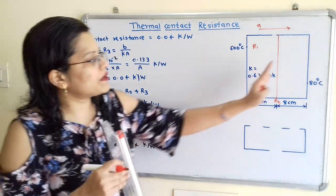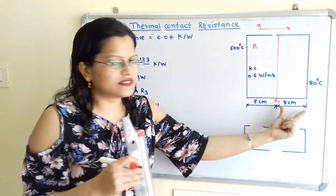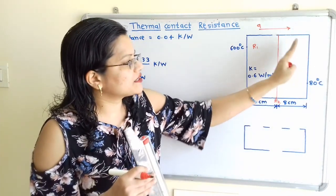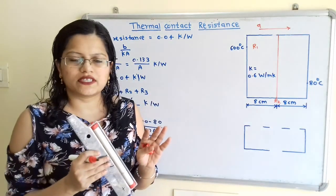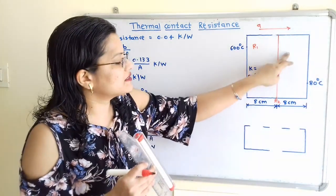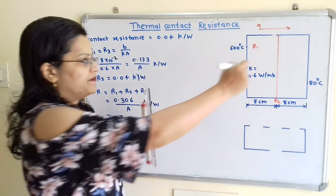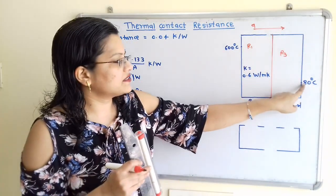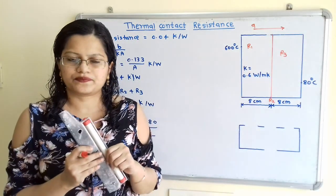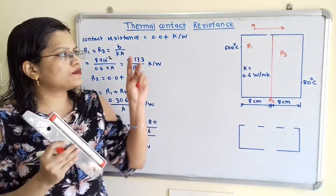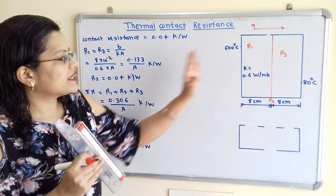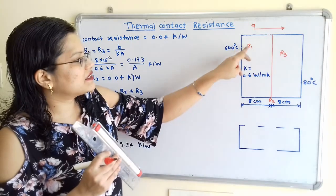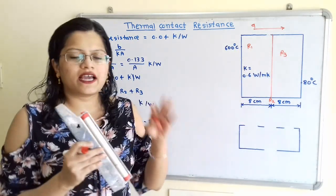After the contact interface, the same material continues with the same thickness and same conductivity, so heat is again transferred by conduction. This conduction resistance through the second layer is R3. After R3, the end temperature is 80 degree Celsius. Observing the pattern of heat transfer, heat is transferred one after another, meaning R1, R2, and R3 are in series.